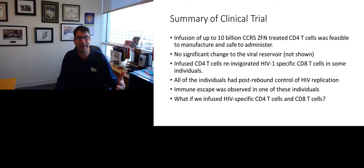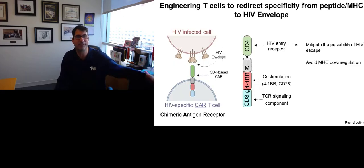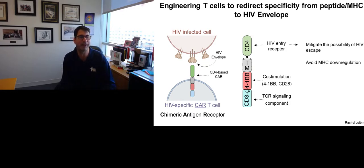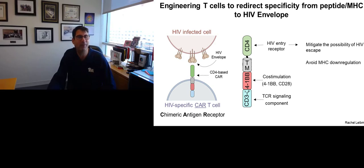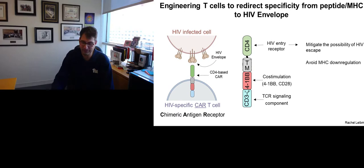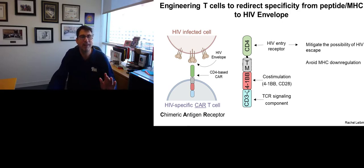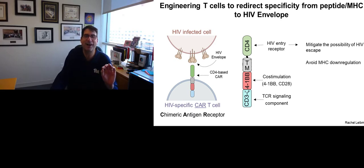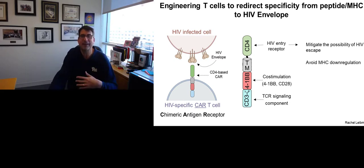I'll show you the preclinical studies that have now led us to test this in the clinic. A chimeric antigen receptor is a different way to direct T cells towards a target. In this case, we are putting the CD4 molecule as the bait for HIV, because CD4 is the natural receptor for HIV envelope. This makes it hard for HIV to escape because if HIV can't bind CD4, it will be hard to get around. After the CD4 targeting moiety, we have a costimulatory molecule such as 4-1BB coupled to the CD3 zeta signaling chain.